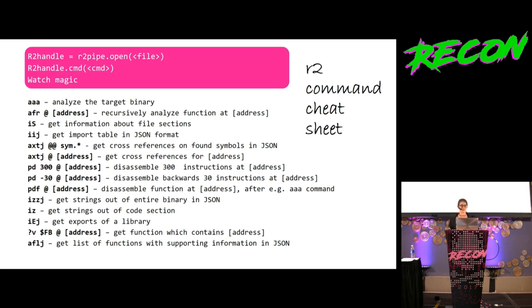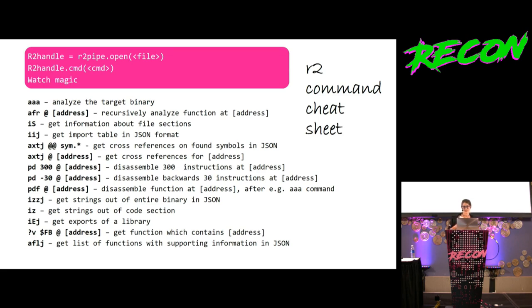Radare2 is very nice because you can concatenate commands — A for analyze, X for cross-references, and J for JSON — and then you get all the cross-references for a particular address in JSON format. This is very hard to understand, so I decided I wouldn't. Although Radare2 is a very nice project — I met lots of their core developers, they're really nice people, they really like to talk about their project and are actively working on improving it. I decided to use Radare2 because I wanted a framework that works. It's actually the user base that creates quality output because they bug the developers to improve their tool, which is why I think more people should use Radare2.